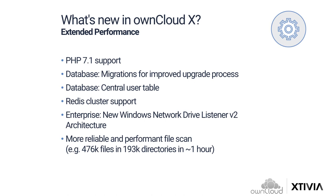Now let's take a look at extended performance. With PHP 7.1 support, OwnCloud 10 runs on modern web technology, increasing overall performance compared to PHP 5 by about 40%. Database migrations now have a seamless, much improved upgrade process. Before OwnCloud 10, users had to upgrade from one major release to another — for example, from 8.2 to 9.0 to 9.1 to 10.0. The improved upgrade process in OwnCloud 10 enables users to skip major versions when upgrading after 10.0. With OwnCloud 10.0.1, it's possible to directly upgrade from 9.0 to 10.0 to accelerate your adoption.